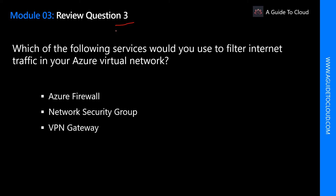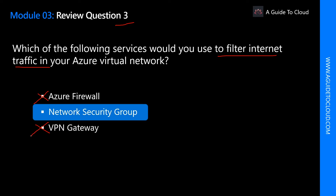Which of the following services would you use to filter internet traffic in your Azure network? The keyword is filtering internet traffic. Azure Firewall — definitely not; we discussed Azure Firewall in the first question. VPN Gateway — definitely not; gateways provide VPN tunneling capability, not filtering. The right answer is Network Security Group. NSGs allow you to filter traffic to and from Azure resources in an Azure virtual network, and an NSG can contain multiple inbound and outbound security rules to filter traffic by source and destination IP address, port, and protocol.